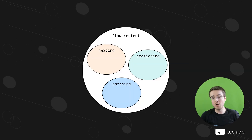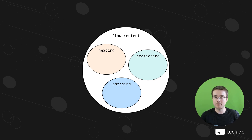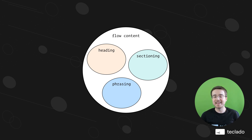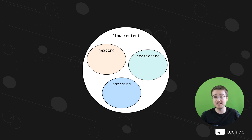To recap: we've got the flow content category, which basically contains all HTML elements except a select few that don't affect what the user sees on the page. Inside flow content there are multiple subcategories, and elements of each subcategory can behave slightly differently or have slightly different properties. We've got sectioning elements, used for dividing or grouping elements into meaningful collections; heading content, used for titles; and phrasing content, used for plain text or elements that become plain text if their associated resource is not available. You don't need to remember every element and its content category, but knowing these exist helps us understand why elements behave differently.